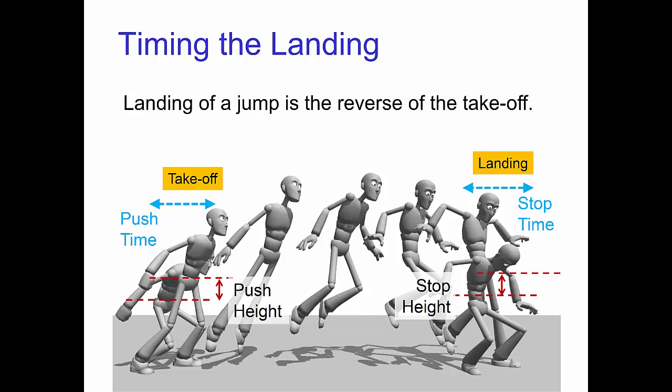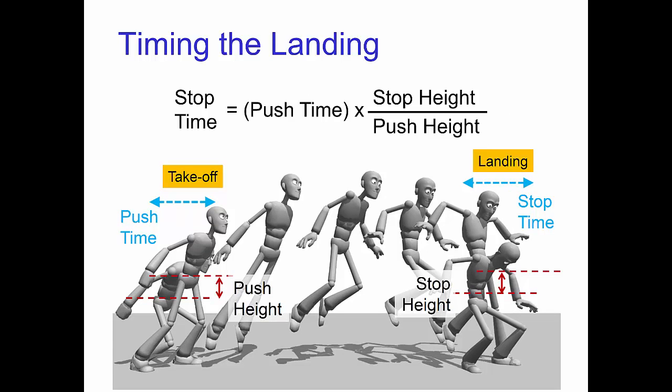The landing in a jump is rather similar to the takeoff. In fact, it's basically the reverse of the takeoff. Instead of gaining speed, you lose speed and come to a stop. For the landing, there's a stop height similar to the push height for the takeoff. There's also a stop time for the landing similar to the push time for the takeoff.